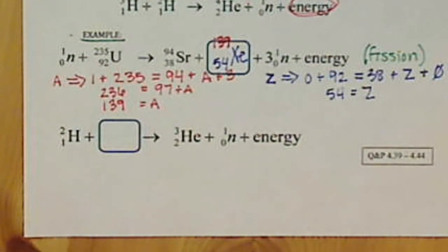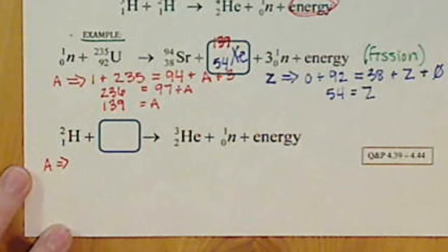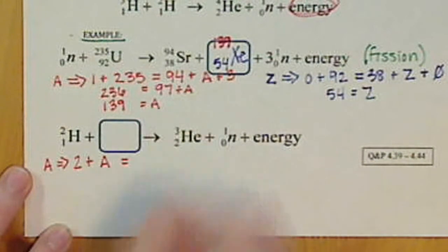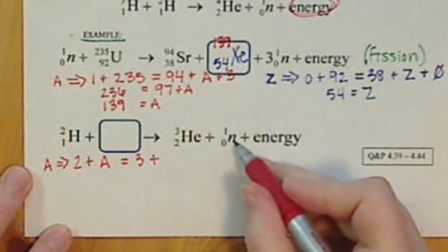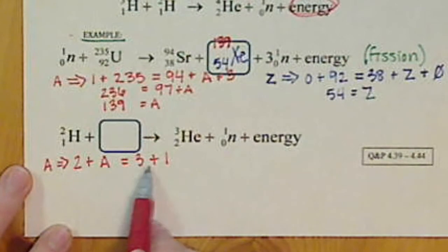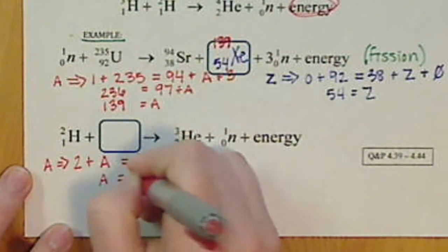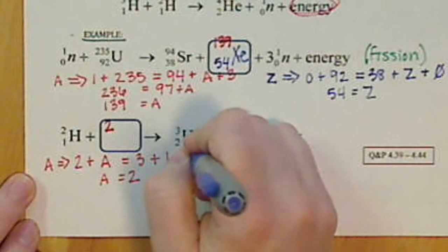All right, next example. Let's look at the same concept here. We have our mass number. We have 2 plus our mass number of our missing symbol. And that's going to equal 3 plus our neutron. So we have 2 + A is equal to 4. So A is equal to 2. And then we want to do our atomic number.